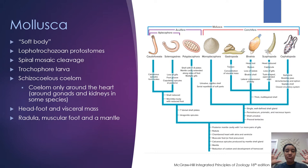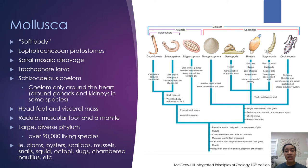Mollusks consist of two major body segments: the head-foot region and the visceral mass. Within their body, they have relatively conserved characteristics — most of them have a radula, some sort of muscular foot, and they all have a mantle. This phyla is heavily diverse; there are over 90,000 recognized species of mollusks on this planet, and that's what we know of so far.